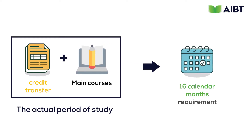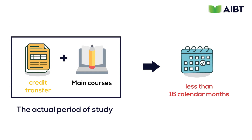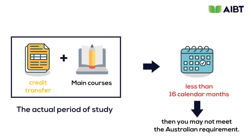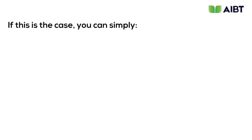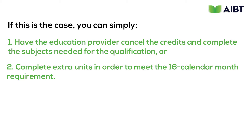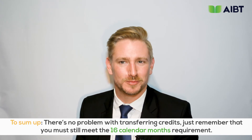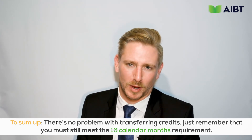The actual period of study with the credit transfer and the main course combined may be used to meet the 16 calendar month requirement. However, if study credits shorten your time physically studying in Australia to less than 16 calendar months, you may not meet the Australian requirement. In that case, you can have the education provider cancel the credits and complete the extra units needed. There's no problem with transferring credits — just ensure you still meet the 16 calendar month requirement.